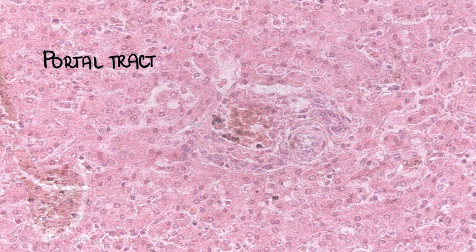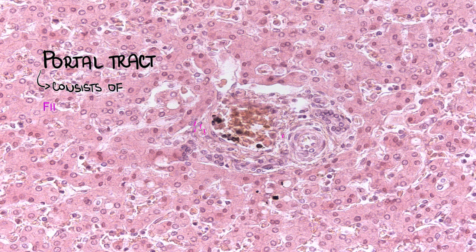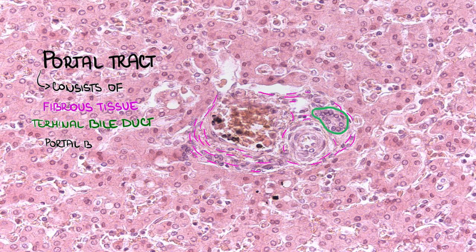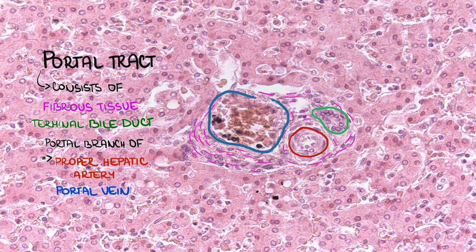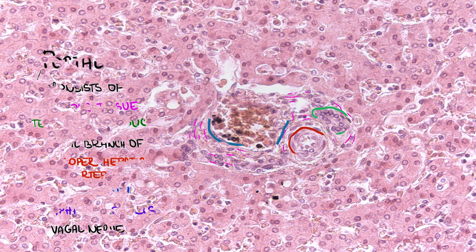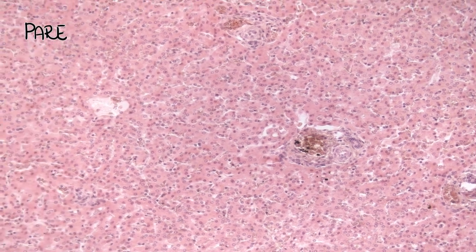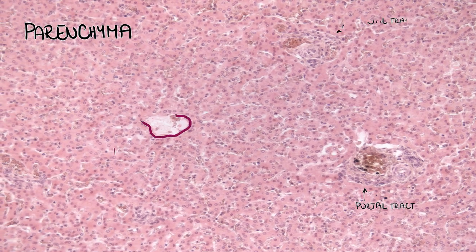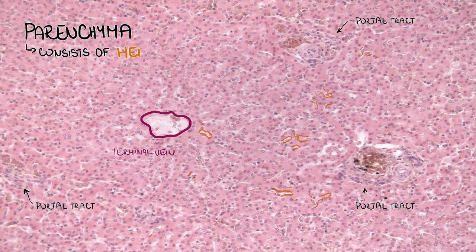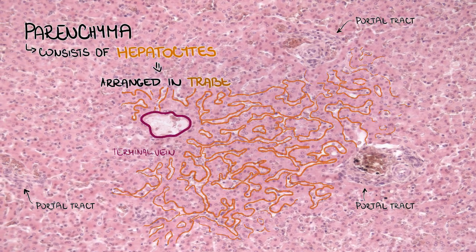The portal tract consists of fibrous tissue and contains a terminal bile duct, a portal branch of the propriohepatic artery, a branch of the portal vein, small lymphatic vessels, and branches of the vagal nerve. The parenchyma of the liver situated between terminal veins and portal tracts consists of hepatocytes arranged in trabeculae.